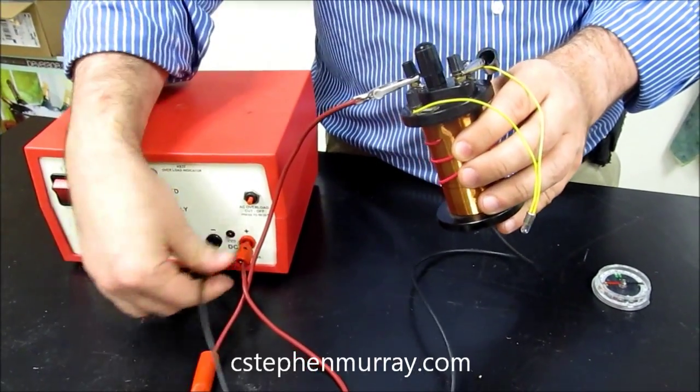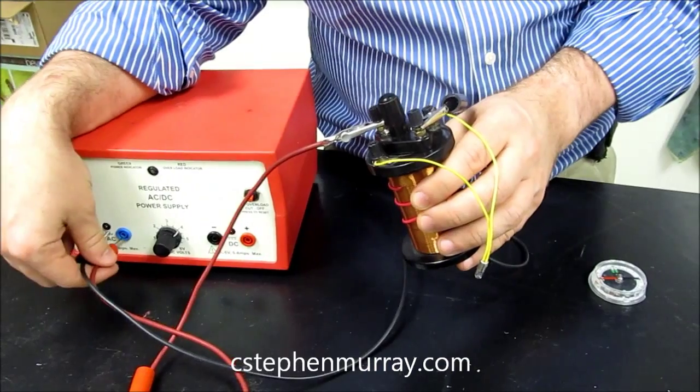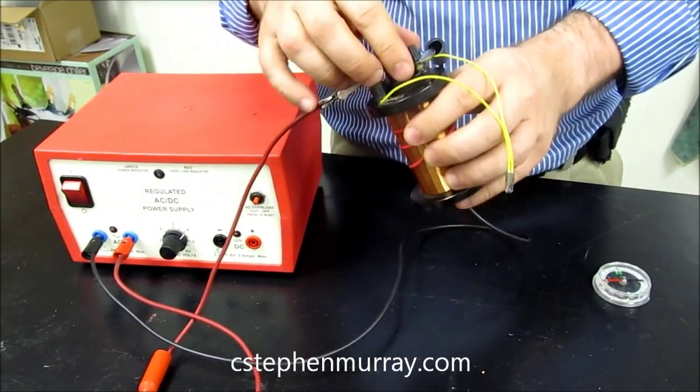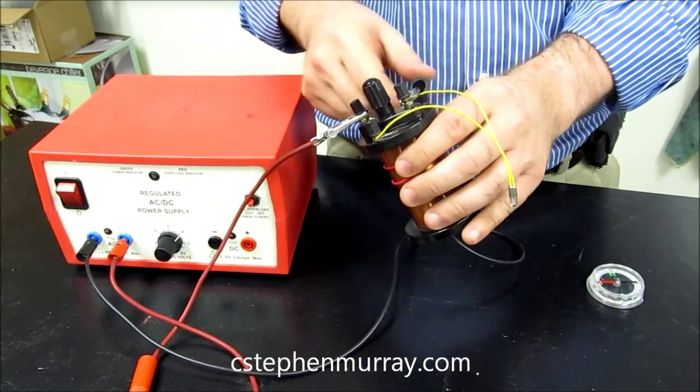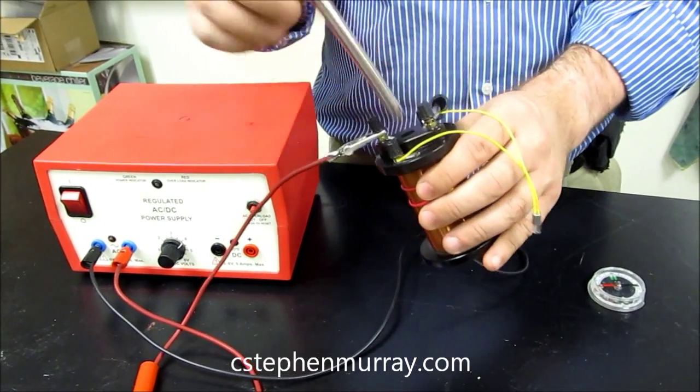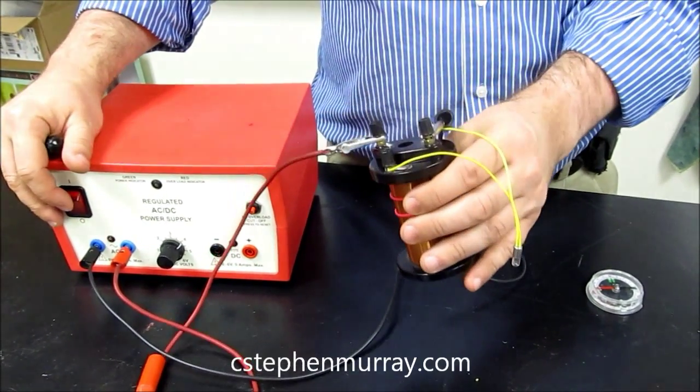Let's go ahead and switch these to alternating current. This is 60 times per second, or 60 hertz, that this is alternating back and forth. I'll start by taking the core out.